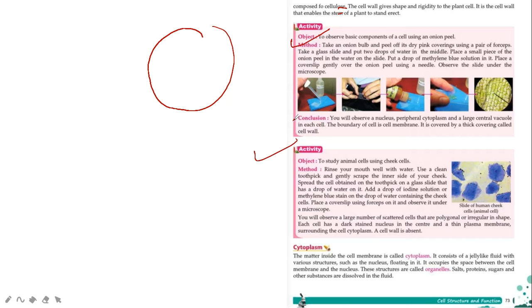Now you have to perform these two activities yourself. This activity we will perform in school, how to study animal cells using cheek cells. We will take the cell from the cheek and see it under the microscope. Onion peel we will also do in school because you must not be having the solutions at your home, blue and red solution.